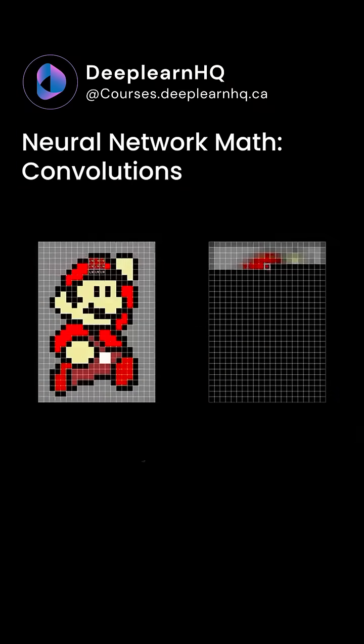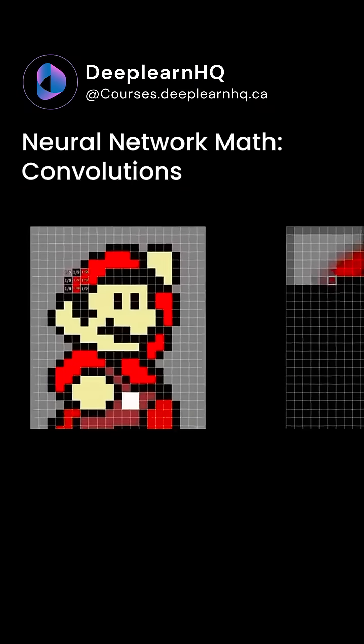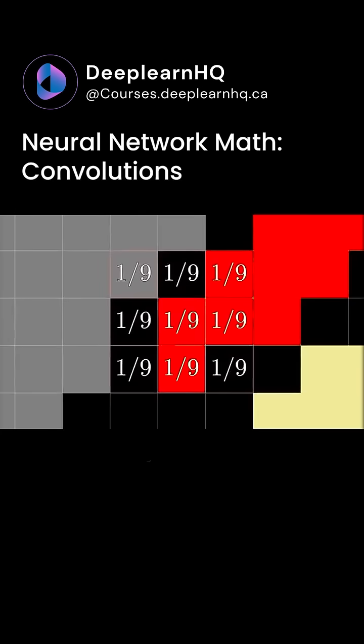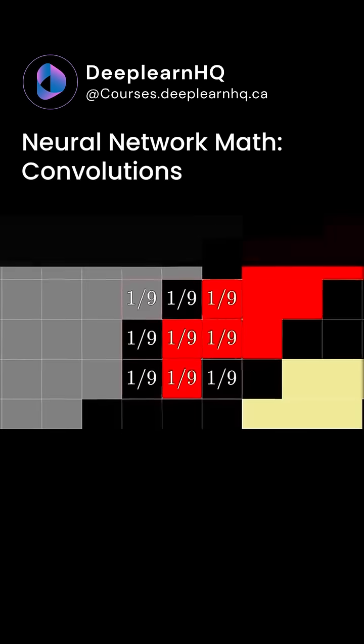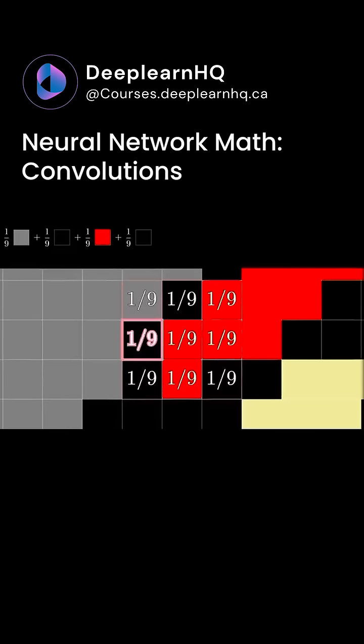What's going on is, I've got this little 3 by 3 grid of values that's marching along our original image and if we zoom in, each one of those values is 1 ninth. And what I'm doing at each iteration is multiplying each of those values by the corresponding pixel that it sits on top of.